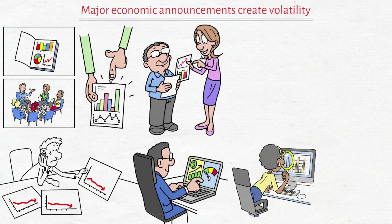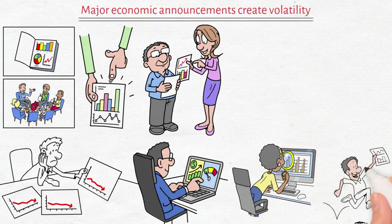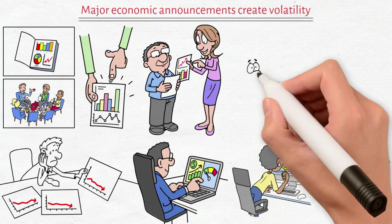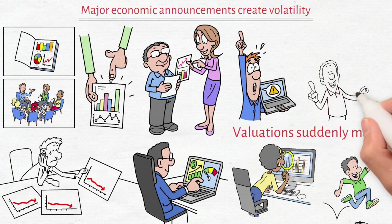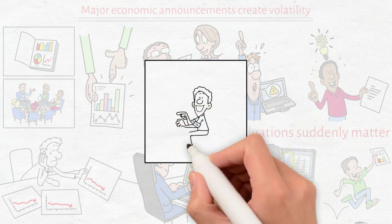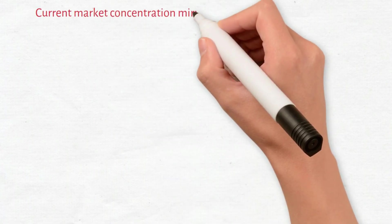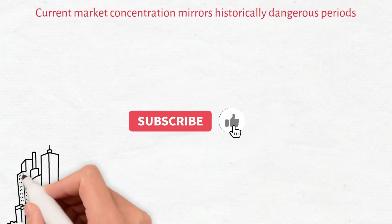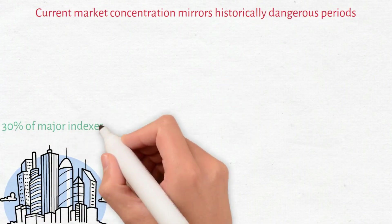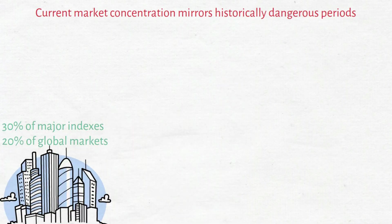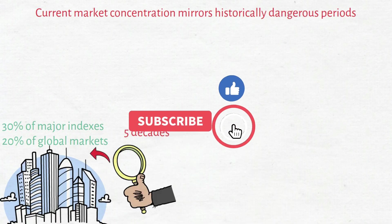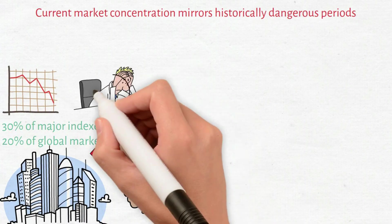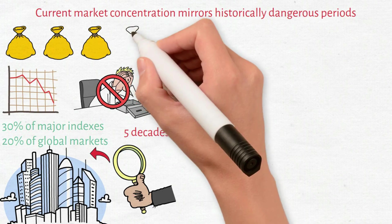Rethink market psychology completely. When tech soared, crowds rushed in. Valuations became irrelevant. Now fear creeps in. Valuations suddenly matter. Smart capital recognizes that fear manufactures opportunity. While masses panic, the wealthy accumulate income-producing assets. Current market concentration mirrors historically dangerous periods. The five largest companies control 30% of major indexes and 20% of global markets. That represents the highest concentration in five decades. When concentration peaks at these levels, corrections follow. But corrections don't damage income growth portfolios. They accelerate wealth accumulation.